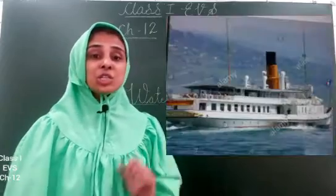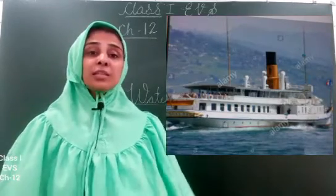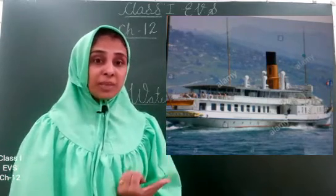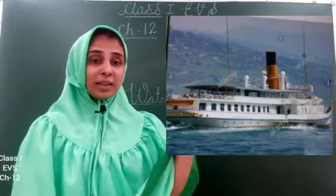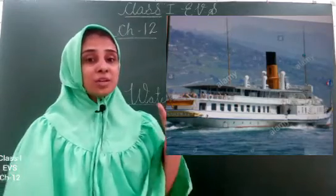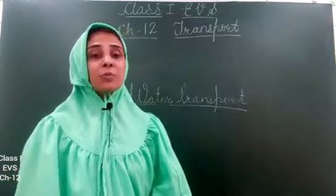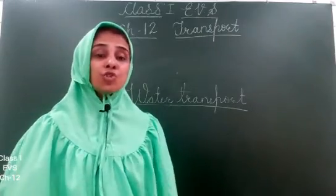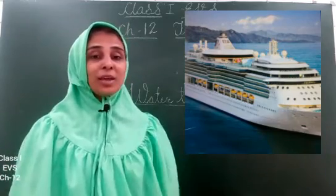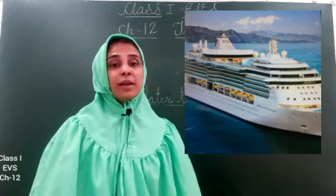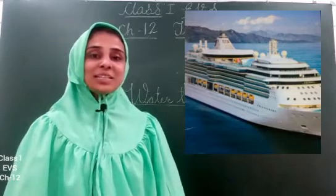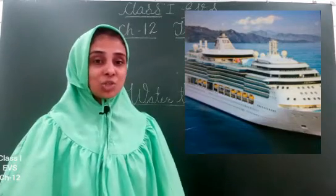Then we have the steamer. In a steamer, steam comes out because of the coal which is added — you can see the chimney, steam is coming out. Steamers are small compared to ships. Ships are very big and can take many people at a time. You know which ship? Titanic — Titanic is a ship.